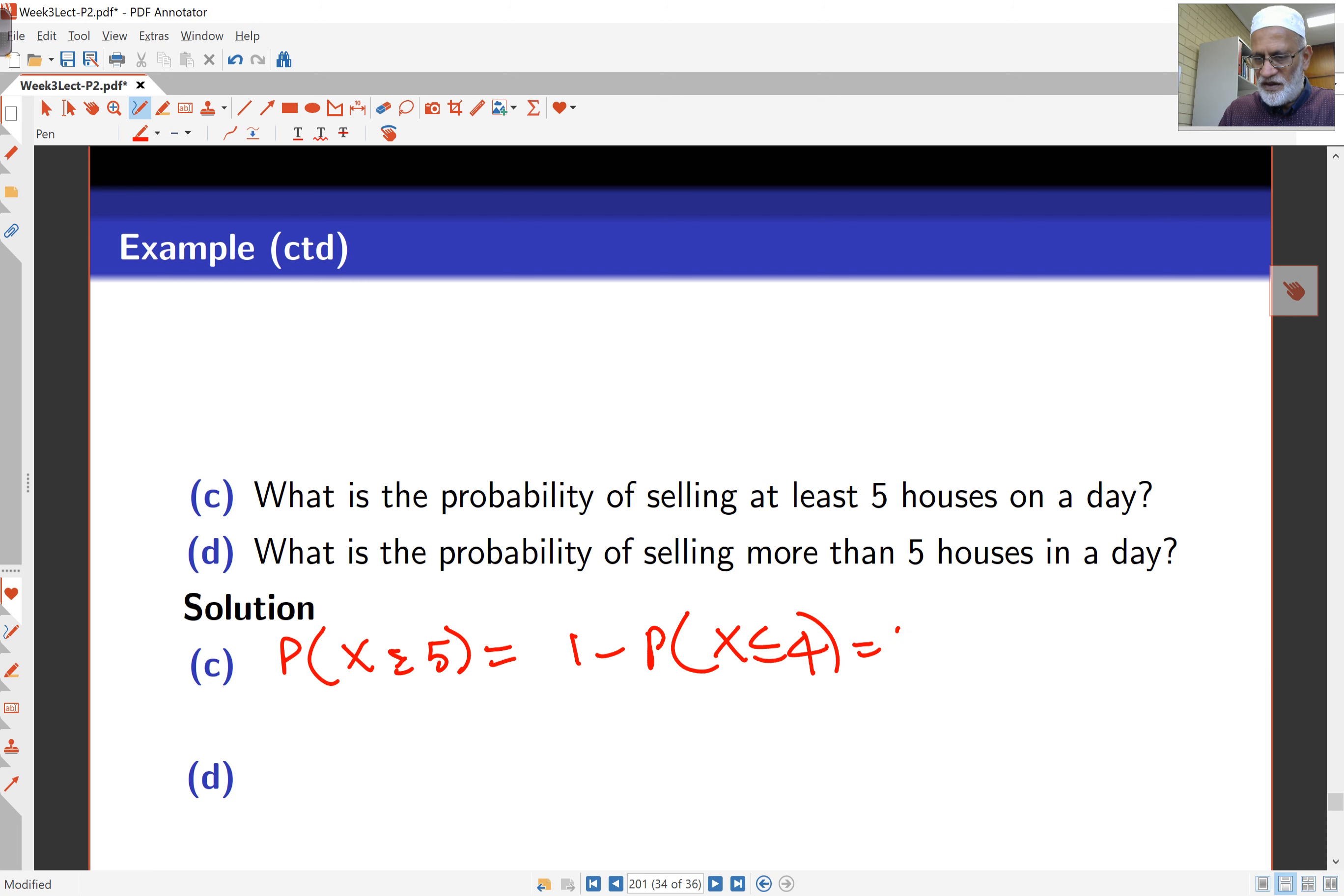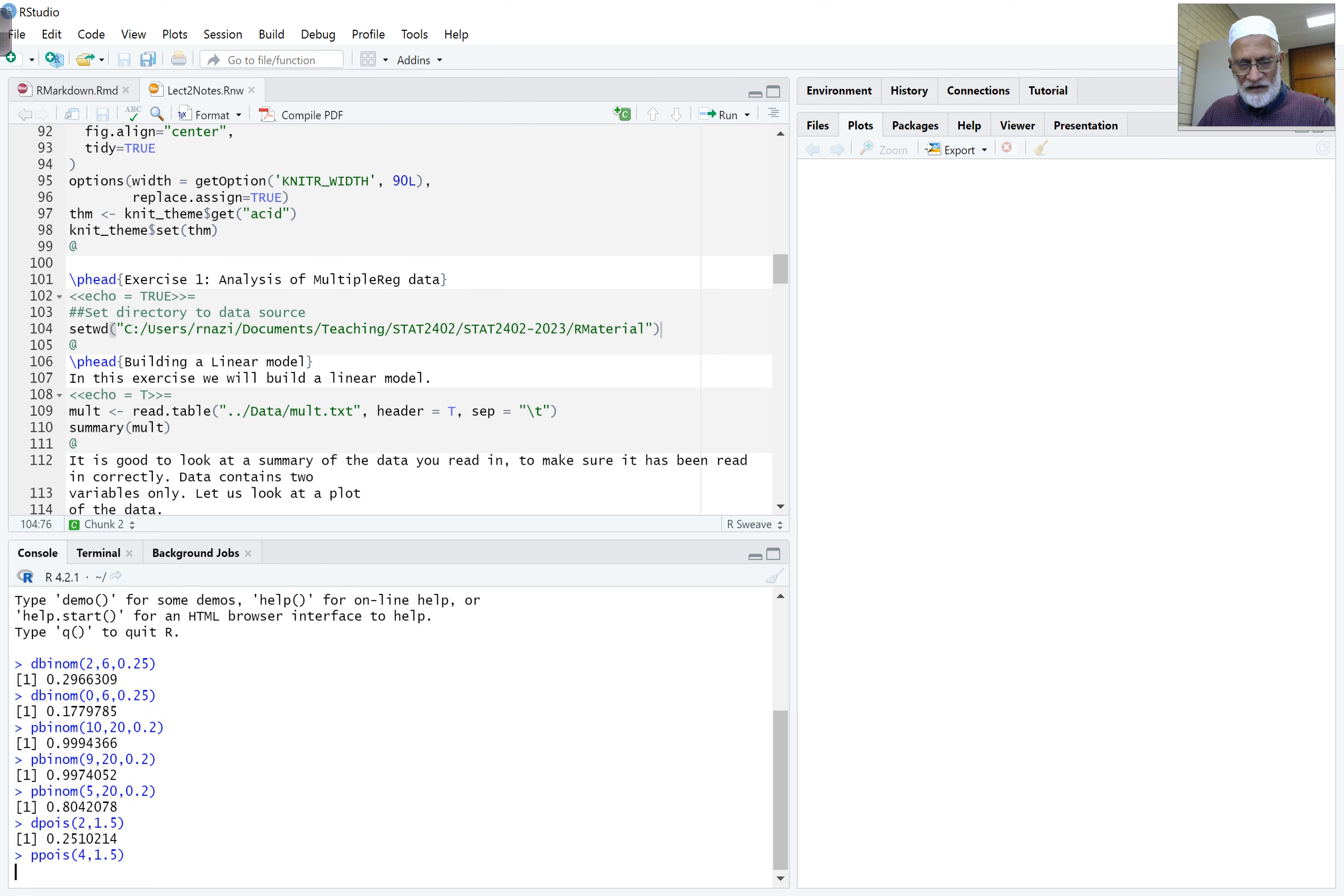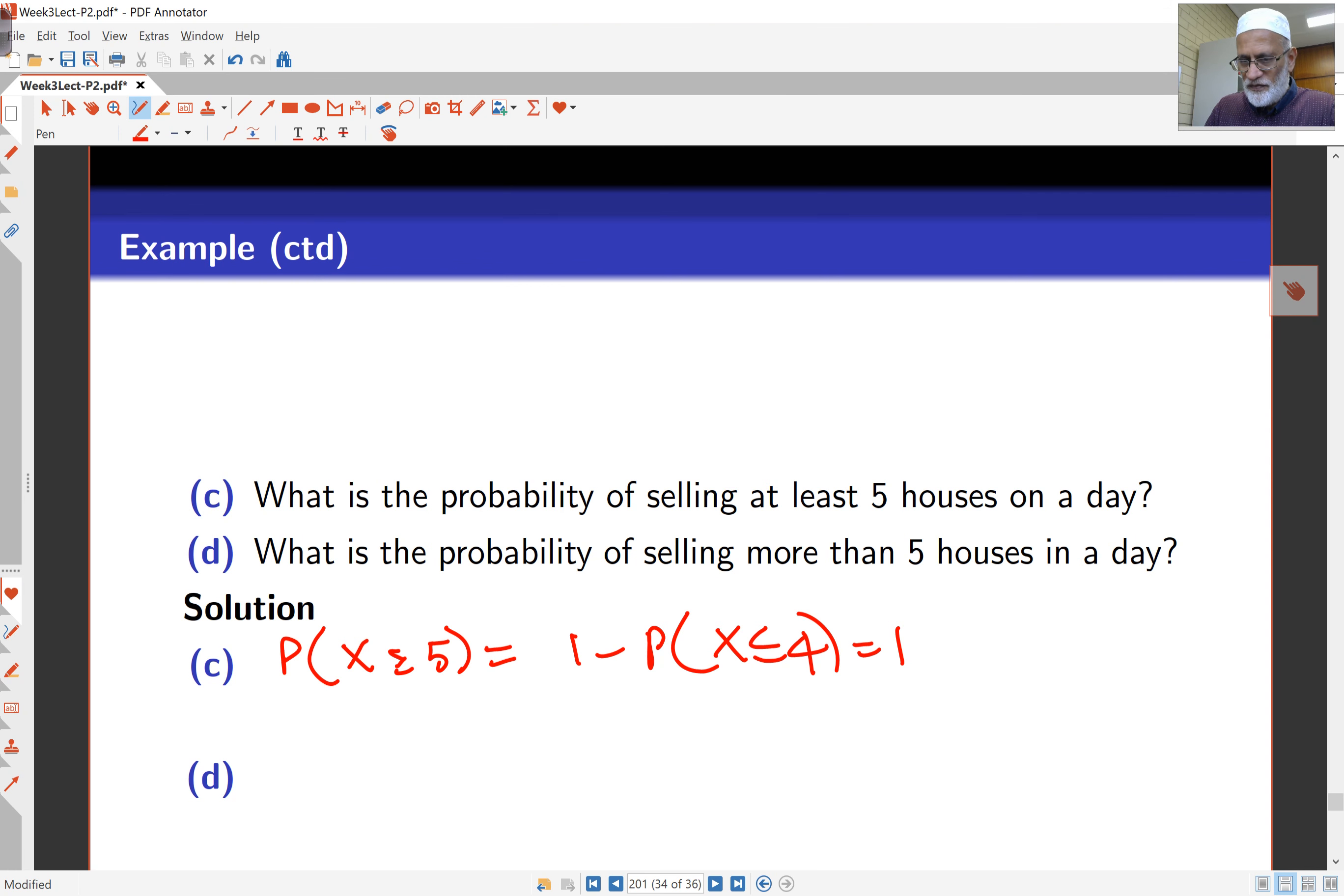And certainly we're not going to use our calculator for this. So I'll go to R again. And here, if it's less than or equal to its probability, then I want the P here. That gives me cumulative probabilities. And this is 4. And that gives me 0.9814. And that comes to 0.0186.